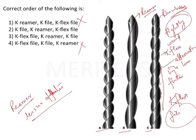So this will be K flex. Now we have got two instruments identified correctly — K reamer and K flex in option 2. So obviously, the remaining instrument will be the K file. Therefore, option 2 will be correct.